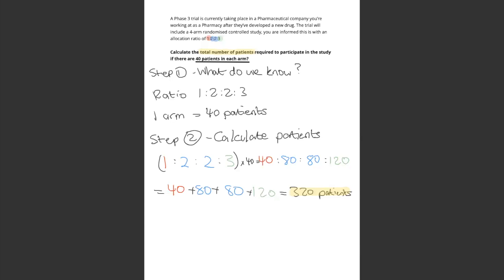We need to calculate the total — add it all up. It will give you 320 patients. The ratios can be a bit confusing, but this is a simpler question. So I hope if this comes up, you're able to now answer correctly in the exam.